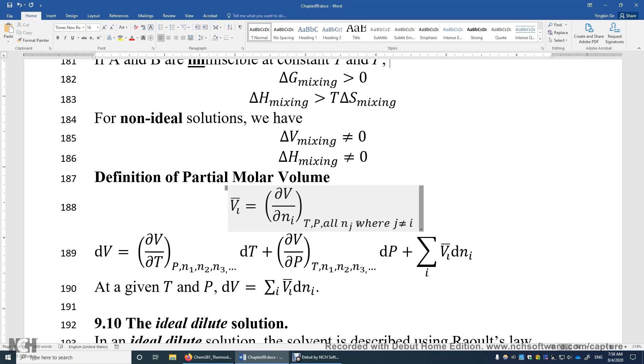So how can we determine the partial molar volume of a water-ethanol mixture? Here it is. You mix one mole of water and one mole of ethanol together, measure its volume, and then you add 0.00000001 mole of water in this solution.